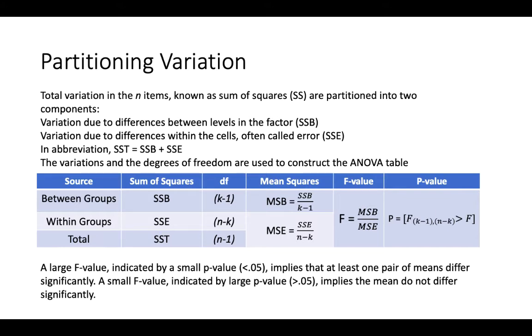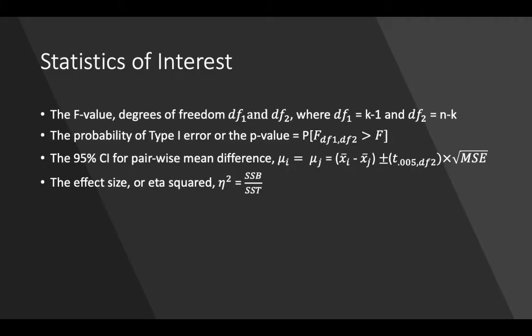A large F value indicated by a small p-value implies that at least one pair of means differs significantly, while a small F value indicated by a large p-value implies the means do not differ significantly. We need to know how to calculate the DF because in a test you may be given the DF and need to extract the sample size. The effect size, eta squared, is also calculated. In a test you may be asked for the 95% confidence interval for pairwise mean differences and the effect size.